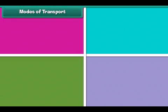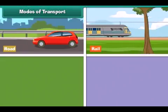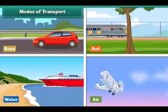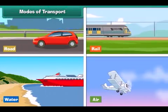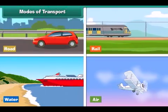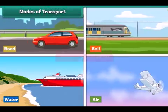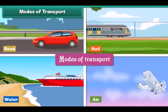Modes of transport: Goods, animals and people can be transported by road, rail, water or air. Different mediums used for transportation are known as the modes of transport.